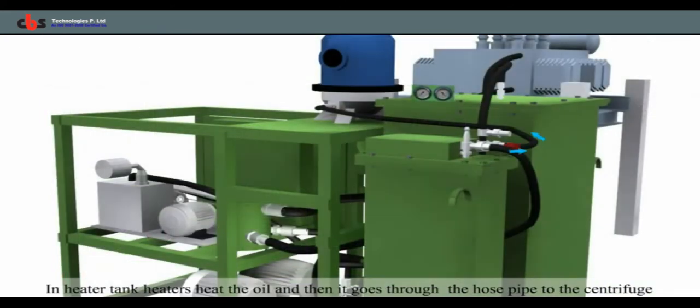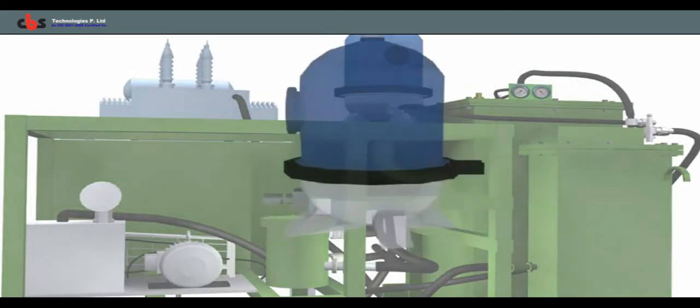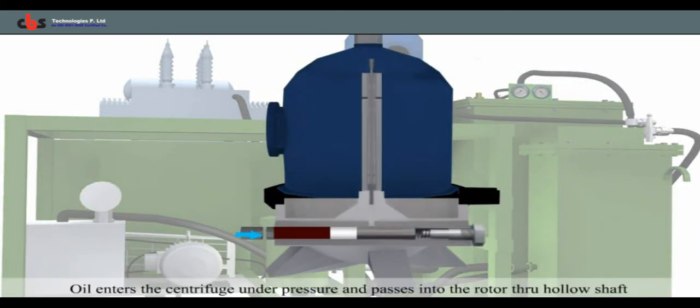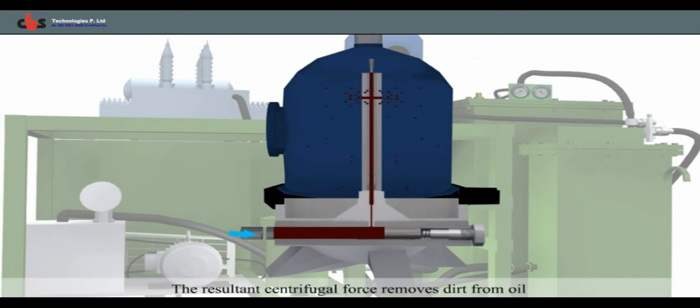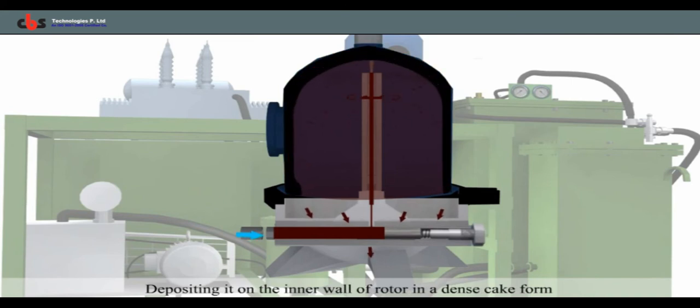This is done by maintaining the pressure of 5 kg with the help of gate valve. In centrifuge, oil enters under high pressure and passes into the rotor through hollow shaft, where solid particles like carbon and soot are removed with the help of centrifugal force.